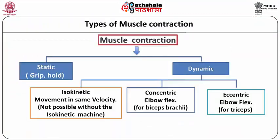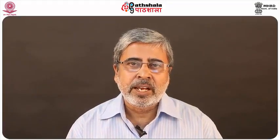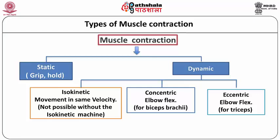Muscle contractions according to joint angles are classified in two categories: static contraction and dynamic contraction. Static contractions are also called isometric contraction. For example, when you grip something and keep holding it, the muscles have already acted, gripped the object, and remain in a contraction stage — so it is an isometric action. In dynamic action there are mainly two classifications, though some authors say three: concentric contraction, eccentric contraction, and isokinetic contraction.